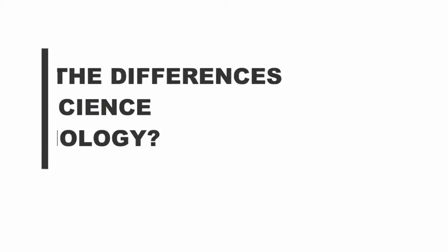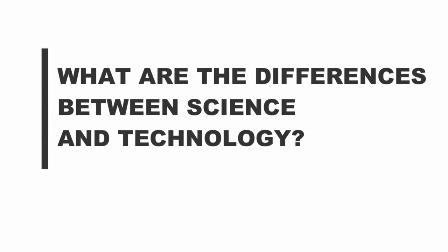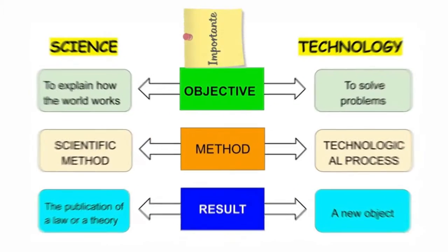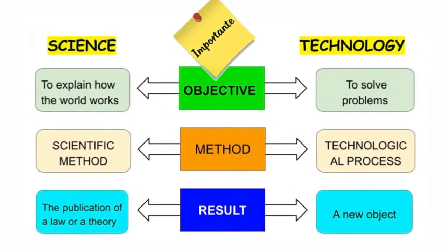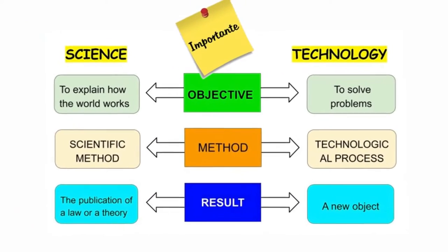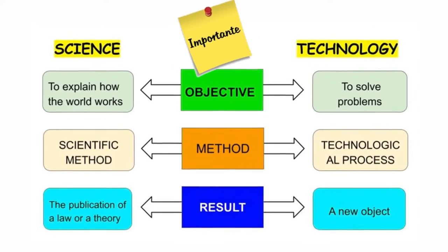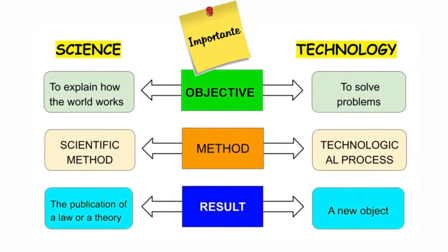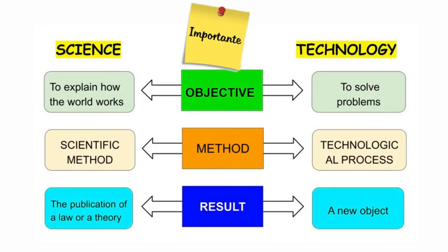What are the differences between science and technology? This table clearly illustrates the differences. As you can see, the objective, the method, and the results are different for science and technology.